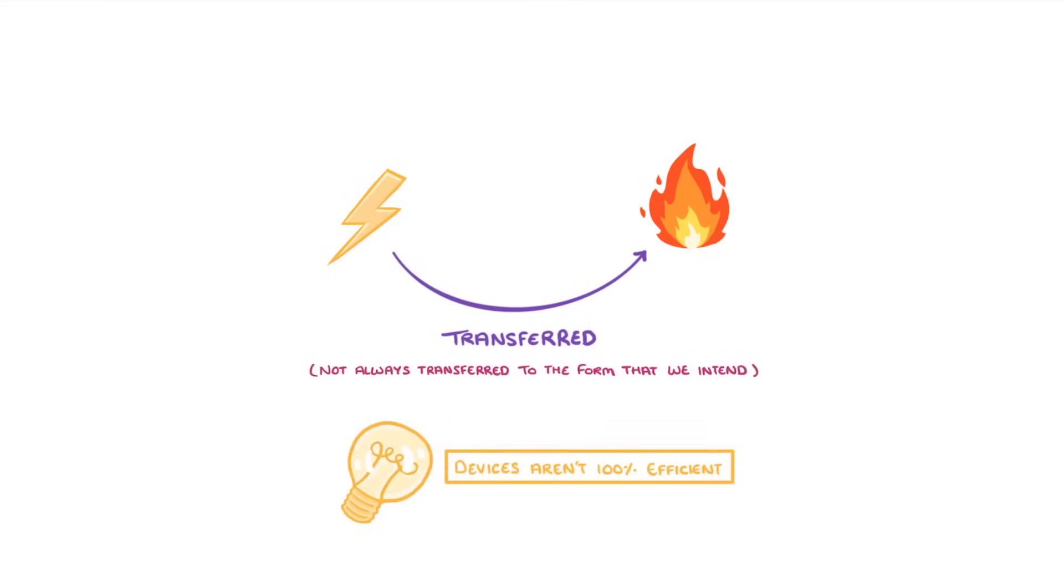We've seen that energy can be transferred from one form into another. However, it's not always transferred into the form that we intend because most devices aren't 100% efficient. In today's video, we're going to look at what efficiency is and how to calculate it, both in terms of energy and power.